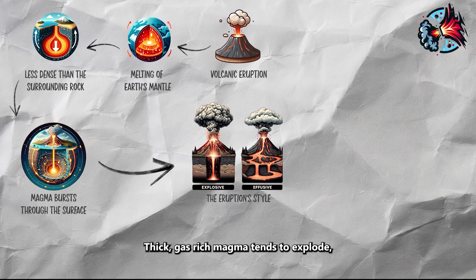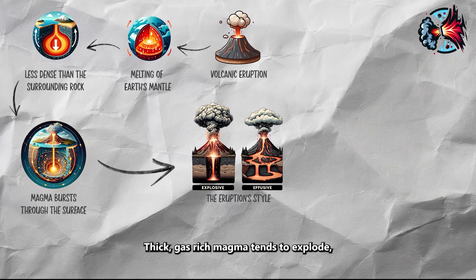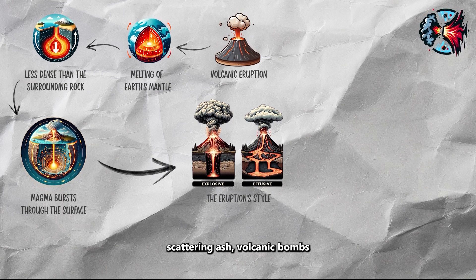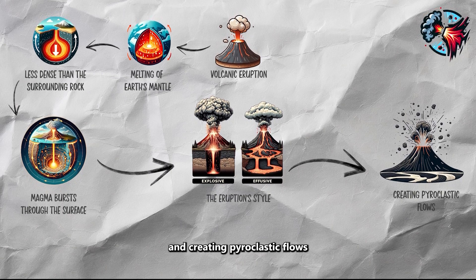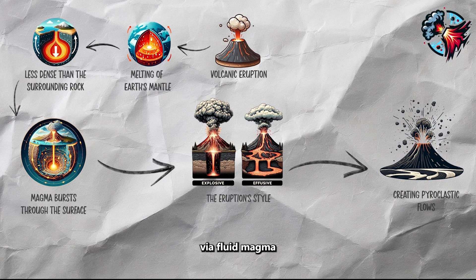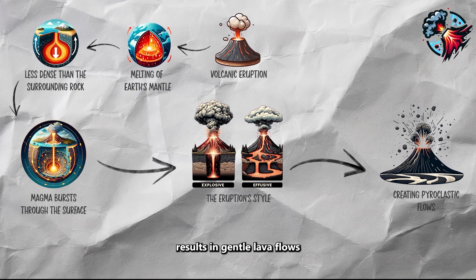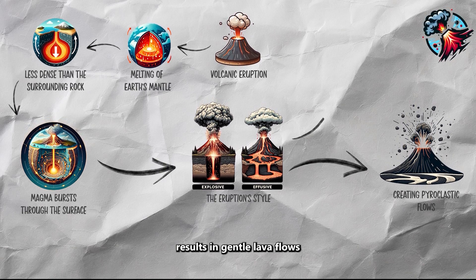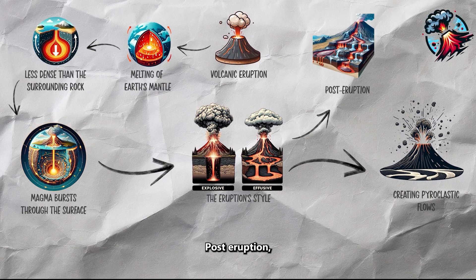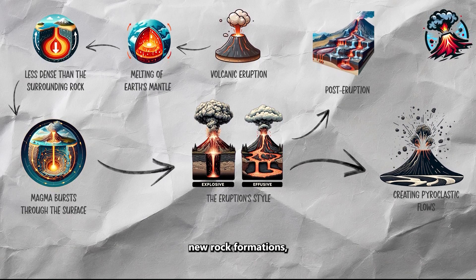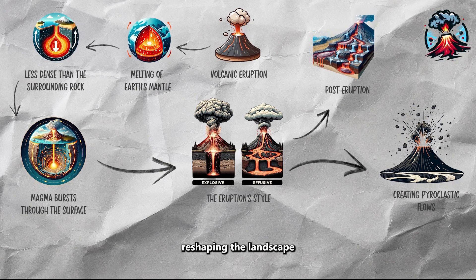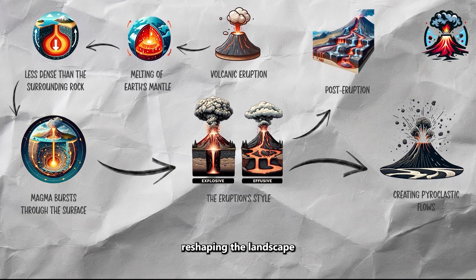Thick, gas-rich magma tends to explode, scattering ash, volcanic bombs, and creating pyroclastic flows, while fluid magma results in gentle lava flows. Post-eruption, the lava cools to form new rock formations, reshaping the landscape.